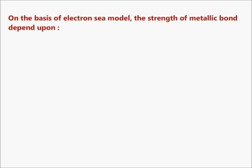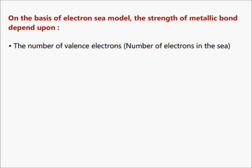On the basis of this electron sea model, the strength of metallic bond will depend on the number of valence electrons, or in other words, number of electrons in the sea, the amount of charge on the metal ions, and the size of the metal ion.